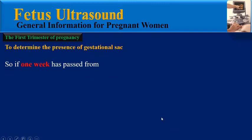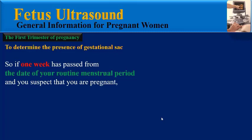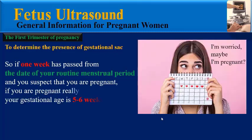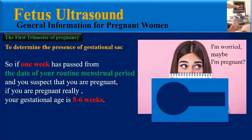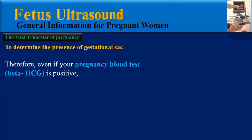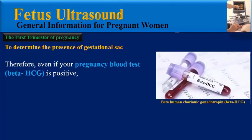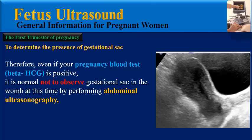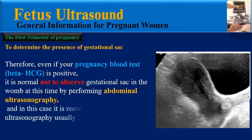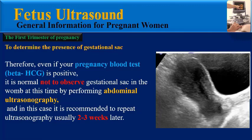So if one week has passed from the date of your routine menstrual period and you suspect that you are pregnant, your gestational age is about five to six weeks. Therefore, even if your pregnancy blood test is positive, it is normal not to observe the gestational sac in the womb at this time by abdominal ultrasonography. In this case, it is recommended to repeat ultrasonography usually two to three weeks later.